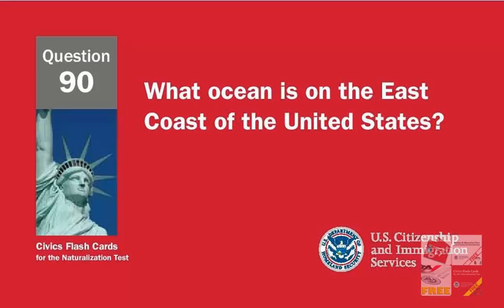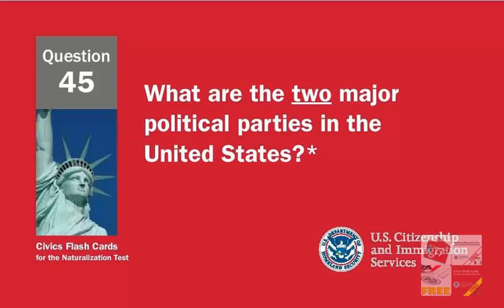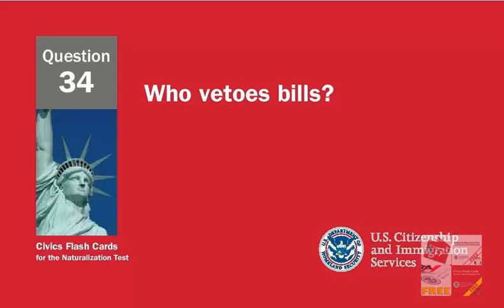What ocean is on the east coast of the United States? Atlantic Ocean. Who was President during World War I? Woodrow Wilson. What are the two major political parties in the United States? Democratic and Republican.